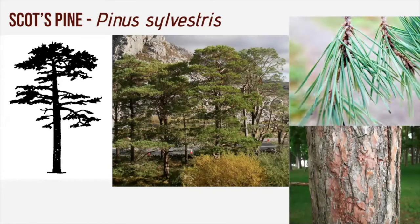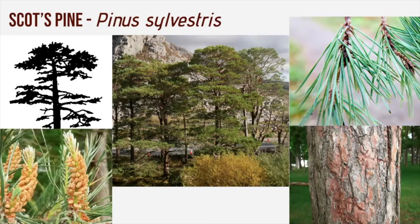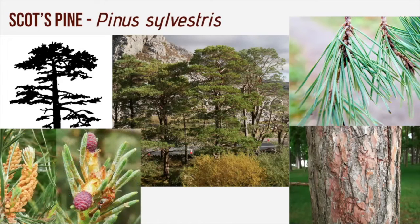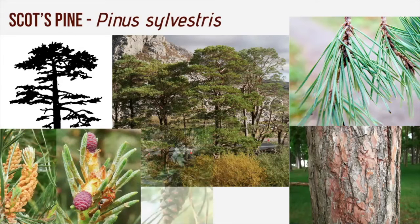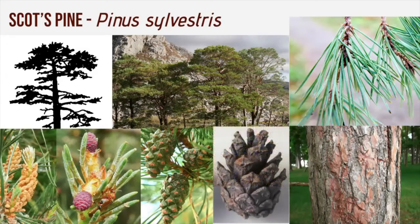The needles are twisted, blue-green, and appear in pairs, and can be up to seven centimetres long. The male cones are yellow and produce pollen, while the female flowers grow at the tips of the new shoot. They turn bright red in May, then turn purple once pollinated, and mature to green and then grey-brown. The cones develop to about three to seven centimetres long, and it takes two to three summers for a cone to fully ripen.